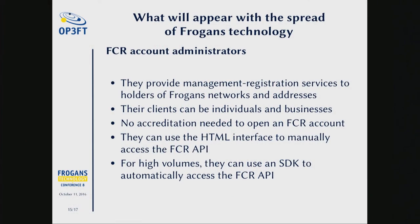Yes, I have 50 seconds, so we'll move very fast on registration issues, because this is something we've talked about already. FCR account administrators manage the registration of Forgance addresses and networks for one person, 10, 100, 1,000, or 10 million people. All you need is to create an account. It's very easy — no accreditation is needed, you just open the account, and then you can use the site either with the HTML version of the FCR API, which will allow accessing and administering these along their lifecycle, or you can use an SDK to automatically access the API to offer a client interface that can be far more performant and which will allow clients to log in their registration requests.